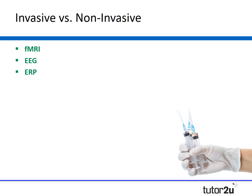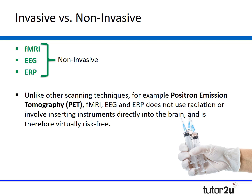In terms of invasiveness, fMRI, EEG, and ERP are all non-invasive techniques. Unlike PET scans (positron emission tomography), they do not use radiation and do not involve inserting instruments directly into the brain, making them virtually risk-free. This is beneficial as it enables more people to participate in scans, furthering our understanding of the human brain.